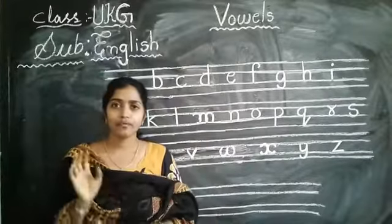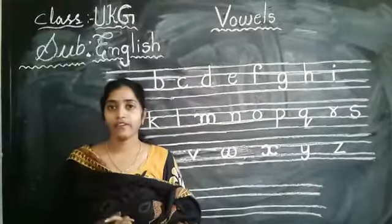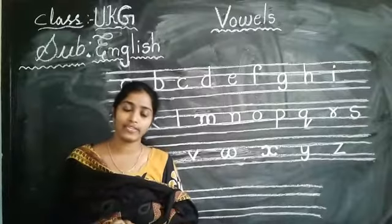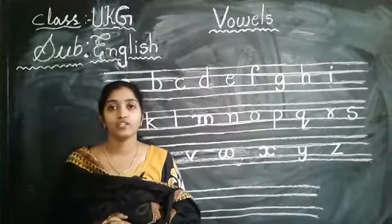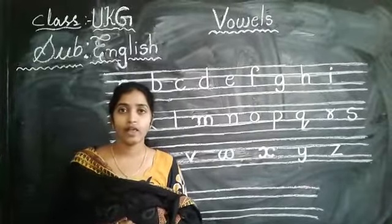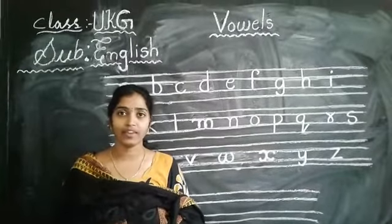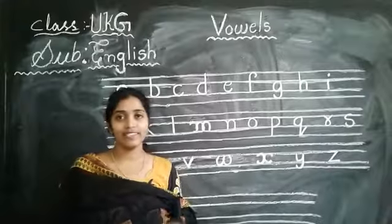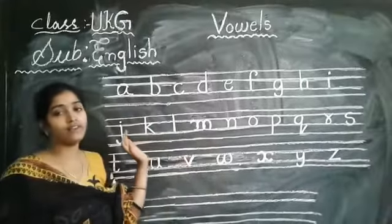So alphabet — we have them, right? 26 alphabets. How many? 26. Once again — we will count, children.